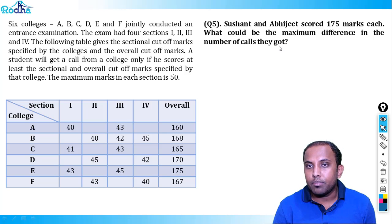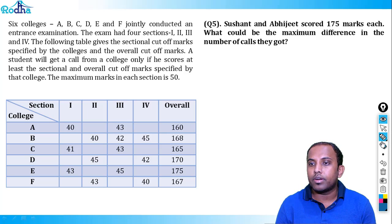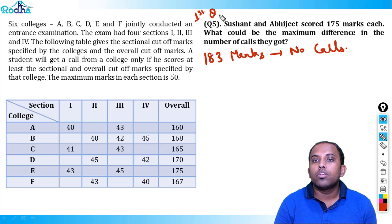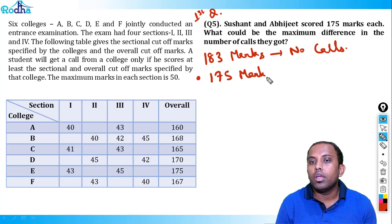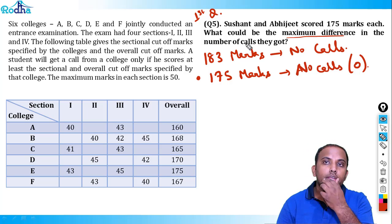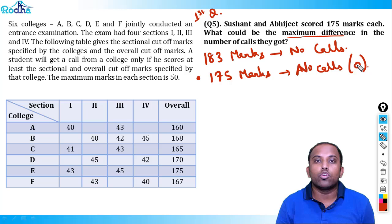Fifth question: Sushant and Abhijit each scored 175 marks. What could be the maximum difference in the number of calls they got? From question 1, we know that after getting 183 marks one can get no calls. Similarly, with 175 marks, one of them can get 0 calls. To maximize the difference, I minimize calls for one person (0 calls) and maximize calls for the other.